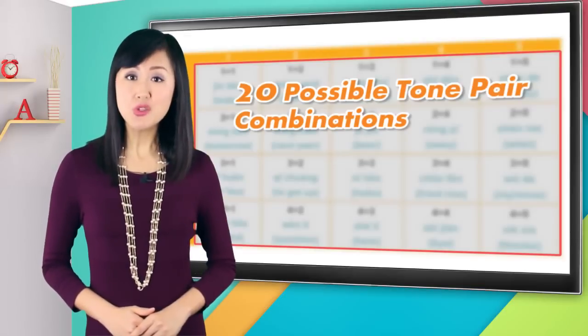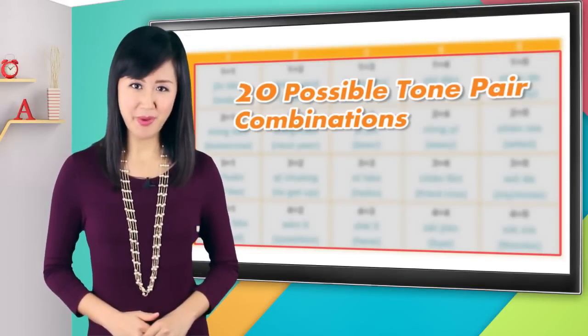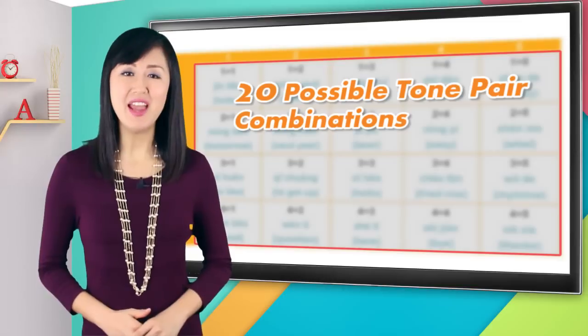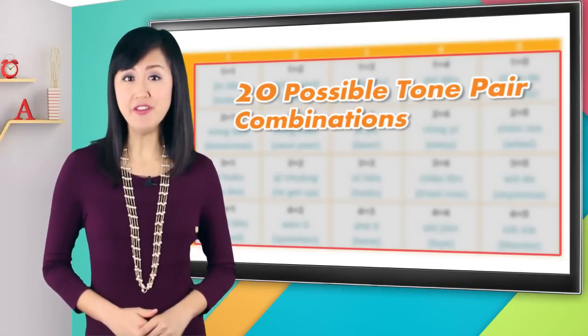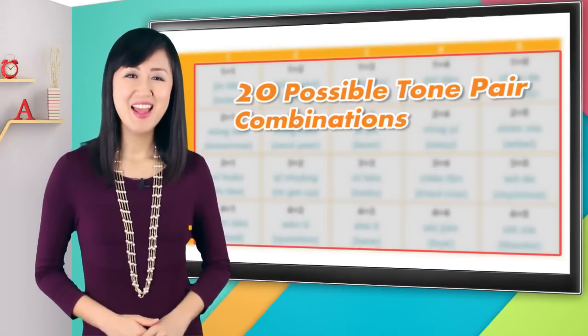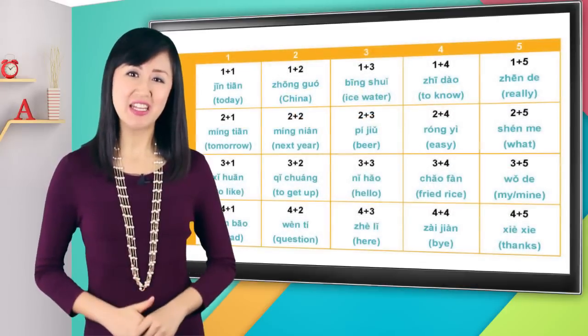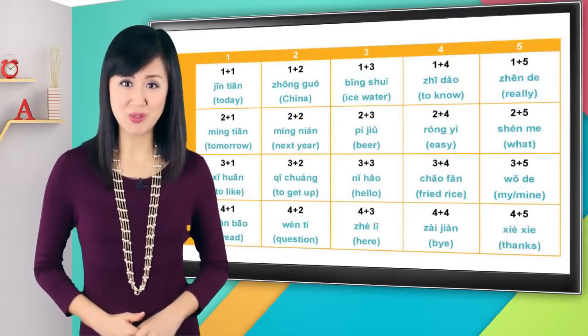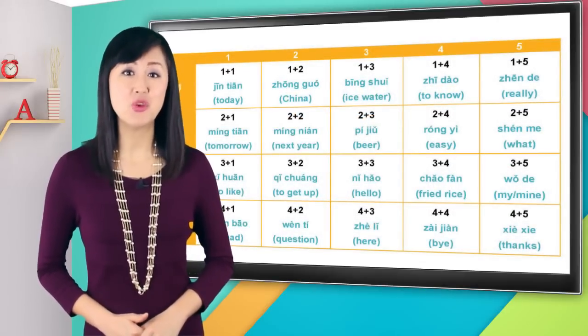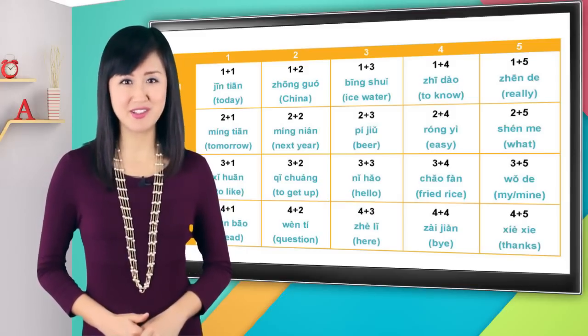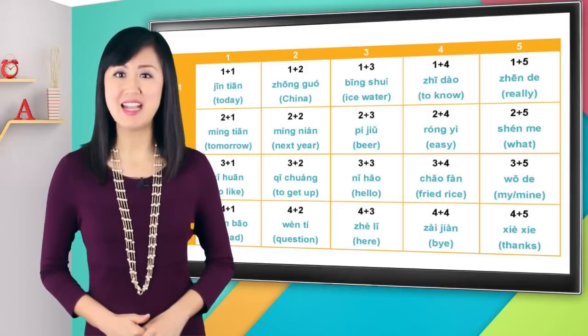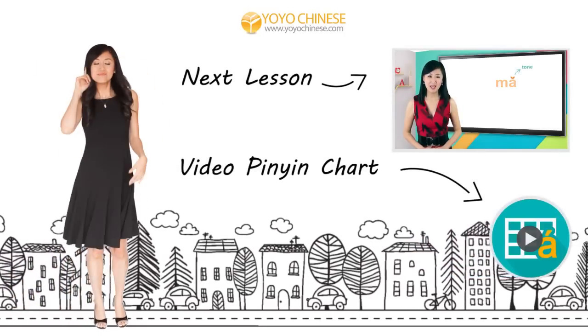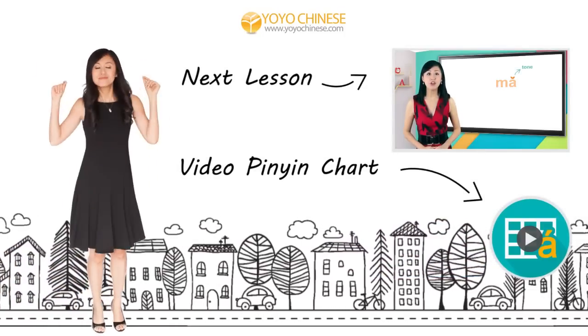Well, we've learned all twenty tone combination pairs now. Words don't begin with a neutral tone, so we don't have any combinations starting with a fifth or neutral tone. Wonderful job! These Chinese tone pairs are the building blocks you need to master Chinese tones. I highly suggest you memorize all twenty words, listen to them, and practice saying them over and over. Cool, and I'll see you next time. 下次见, 再见. Bye-bye!